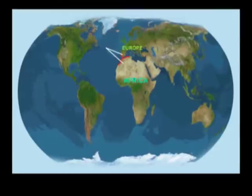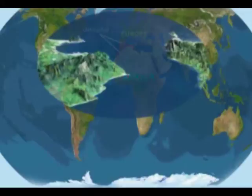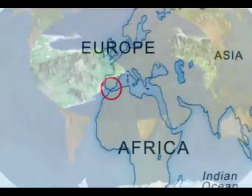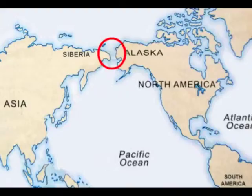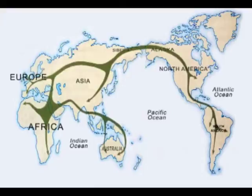Thus, the continents of Europe and Africa, now separated by the Strait of Gibraltar, were earlier connected by land bridges. Similarly, Alaska of North America and Siberia of Asia were connected by land bridges. Such land links between different continents and countries facilitated the movement of prehistoric man and animals. During interglacial periods, the ice melted to a great extent, raising the level of water in seas and oceans, which ultimately separated many countries and continents, restricting the movement of prehistoric peoples.